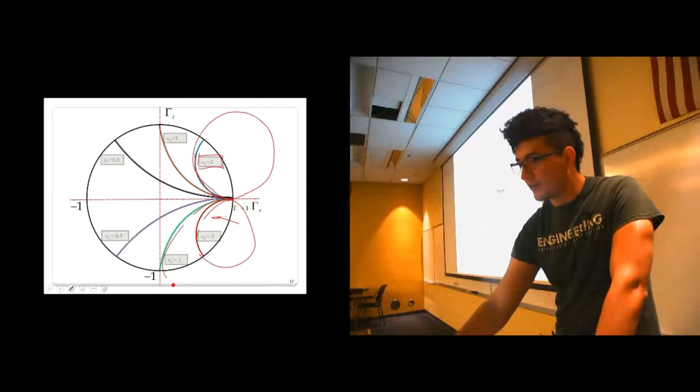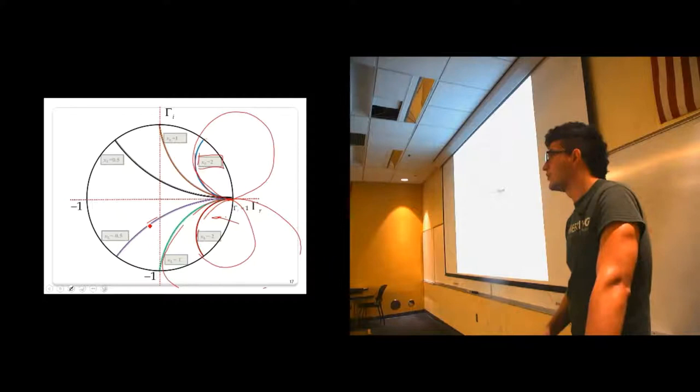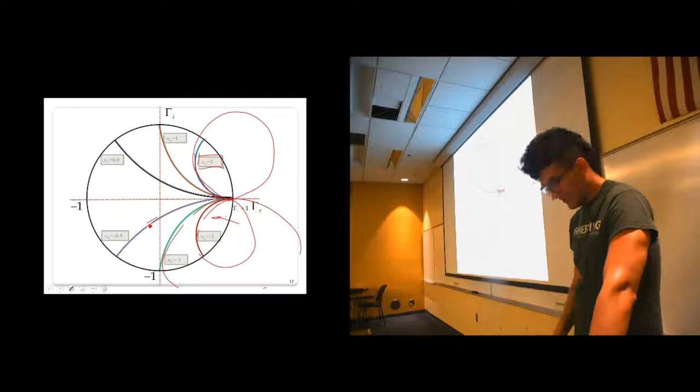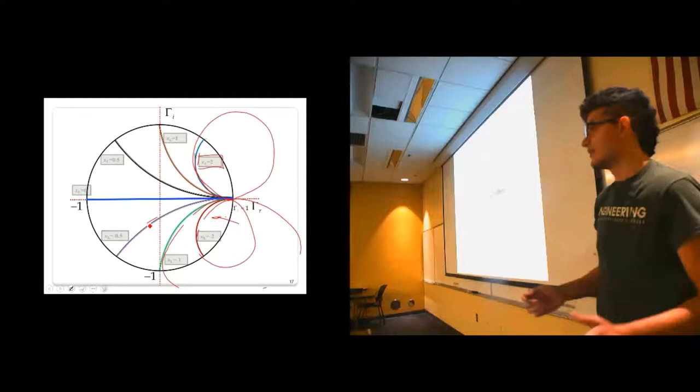So at the end, if you plot x equals zero, what do you think you're going to see? It's like a circle with infinite radius. So it becomes just like a straight line. So this straight line right here is x equals zero. That means you have no imaginary values in your load.